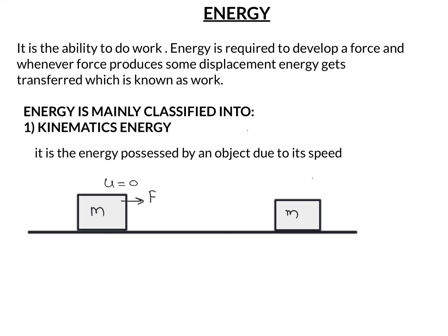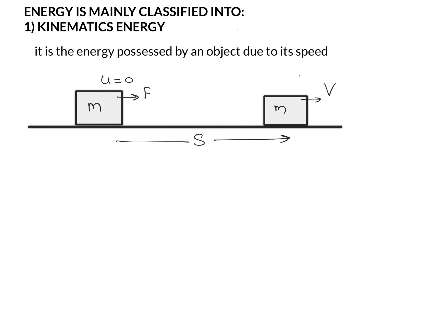Because of that force, the object gets accelerated and travels a displacement S, with its speed increasing from 0 to V. So we can find out the value of kinetic energy attained by this object. Kinetic energy equals the work done by this force, or work done by this force is converted into kinetic energy.